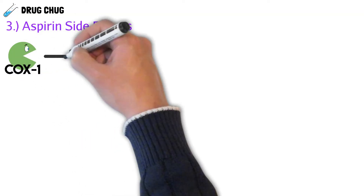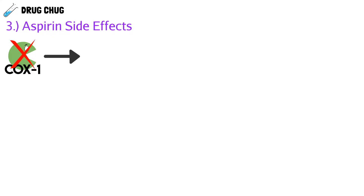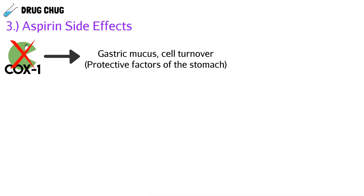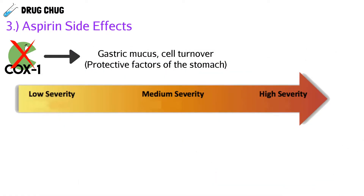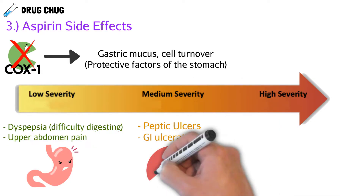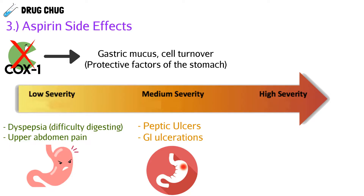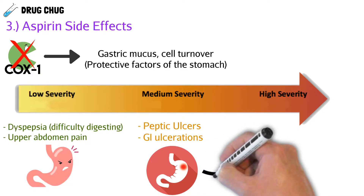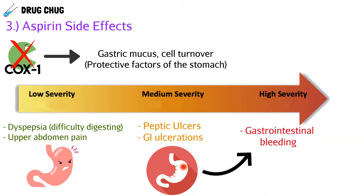Now let's talk about aspirin's side effects. COX-1 is also responsible for protective factors in the stomach — it produces gastric mucus and helps with cell turnover. If we block COX-1, we also block these protective factors. We can see dyspepsia, upper abdominal pain, and if more severe, peptic ulcers or GI ulcerations, because without the protective mucosa layer the stomach acid keeps attacking the stomach wall.